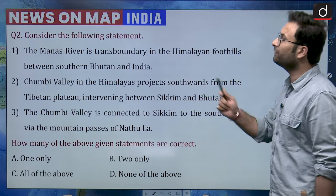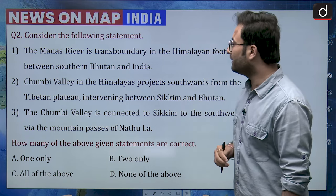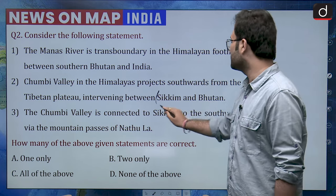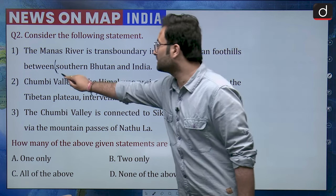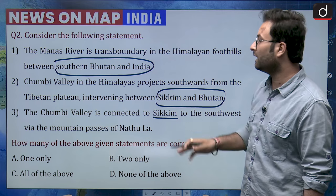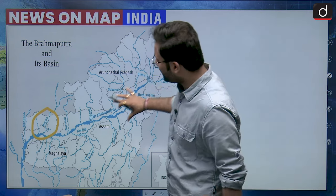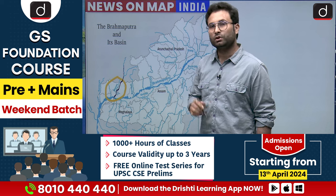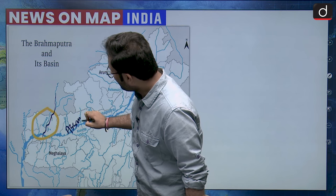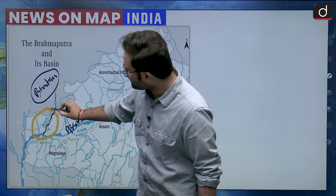Question number two: consider the following statements. First, the Manas river is transboundary in the Himalayan foothills between southern Bhutan and India. Second, Chumbi valley in the Himalayas projects southward from the Tibetan plateau, intervening between Sikkim and Bhutan. Third, Chumbi valley is connected to Sikkim to the southwest via the Nathula pass. Here you can see the map of Brahmaputra — Manas is basically a tributary of Brahmaputra, and it enters Assam from southern Bhutan. So the first statement is correct.